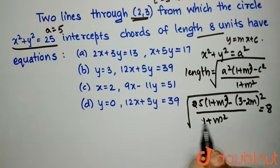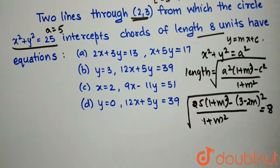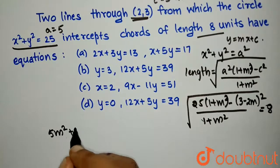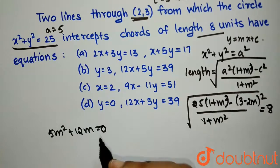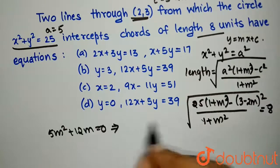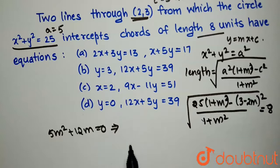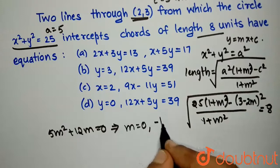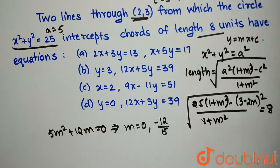Now if I compare both sides, I will get my equation to be 5m²+12m=0. From here, on solving this, I get my m value to be either 0 or -12/5.